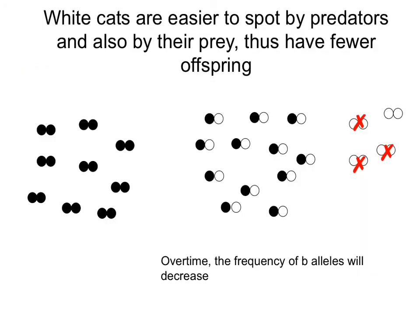Using our cat example: if white cats are spotted by predators, or when they're hunting their prey can see them at a distance because they're white and stand out — over time those individuals will have a harder time finding food and a harder time reproducing, as they have fewer resources. So over time they will have fewer offspring and their alleles will become less frequent in the population.